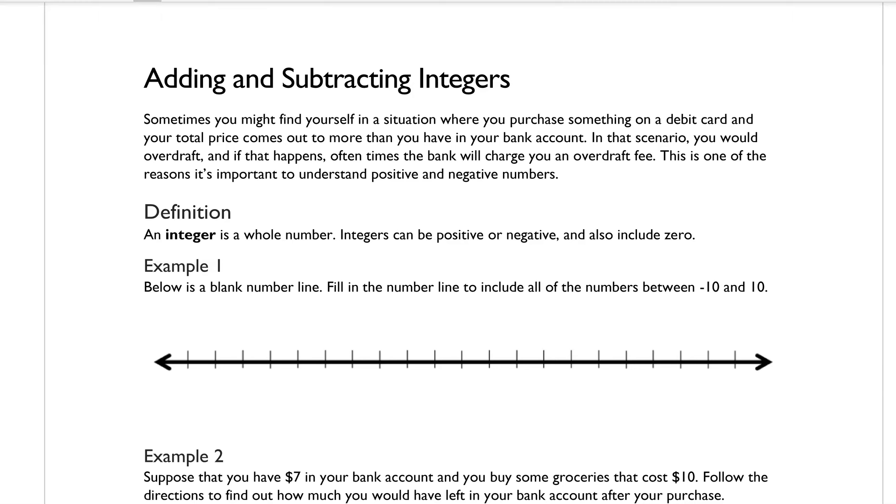So I'm going to go ahead and fill out the numbers on my number line. So here's negative 10, negative 9, negative 8, negative 7, negative 6, negative 5, negative 4, negative 3. I'm going kind of quickly now, so I'm just filling these out. So now I have all of the integers between negative 10 and positive 10.